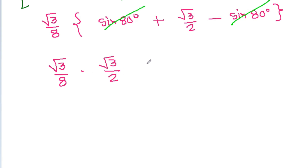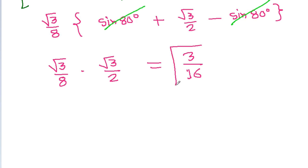So the result is √3/8 × √3/2 = 3/16. The value of sin 20° × sin 40° × sin 60° × sin 80° = 3/16.